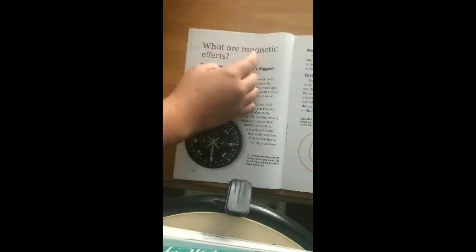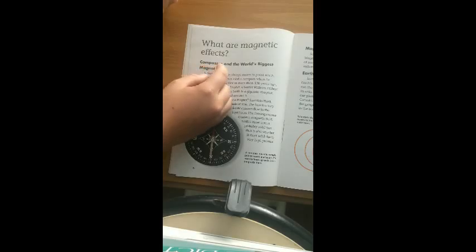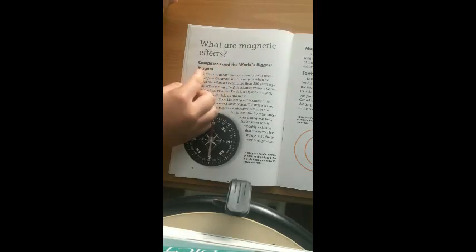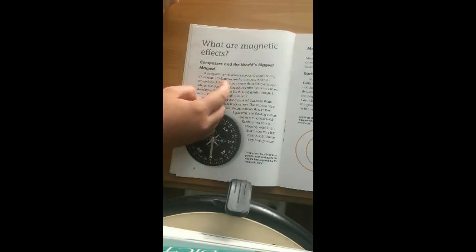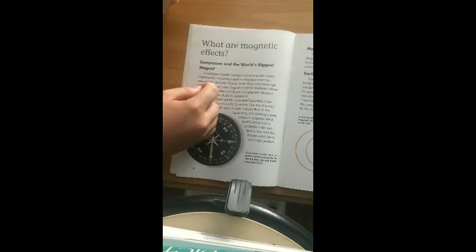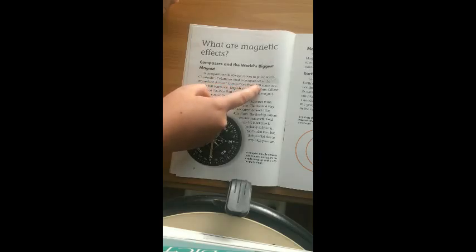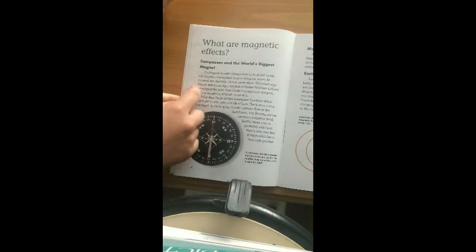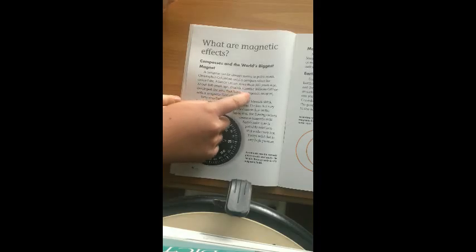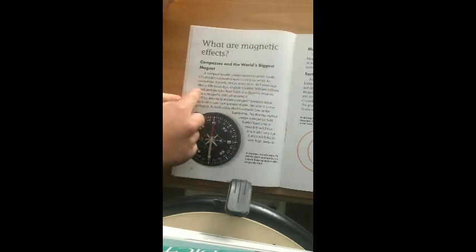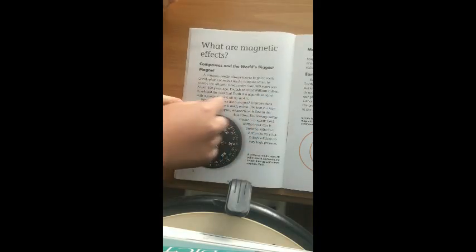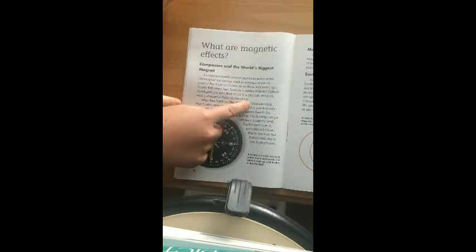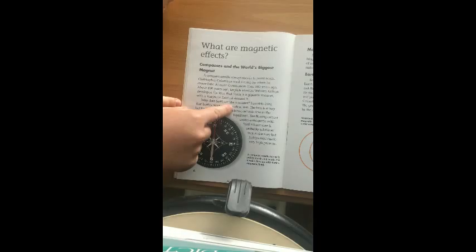What are magnetic effects? Compasses and the world's biggest magnet. A compass needle always moves to point north. Christopher Columbus used a compass when he crossed the Atlantic more than 500 years ago. About 400 years ago, English scientist William Gilbert developed the idea that Earth is a gigantic magnet with a magnetic field all around it.